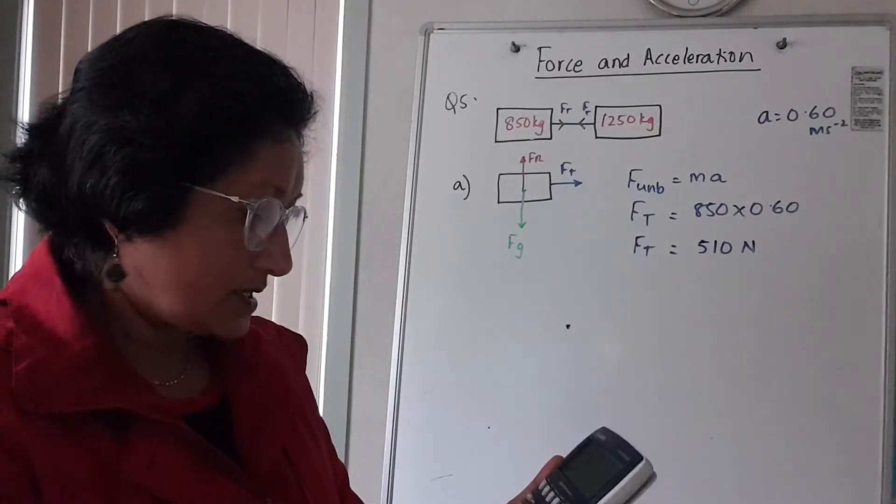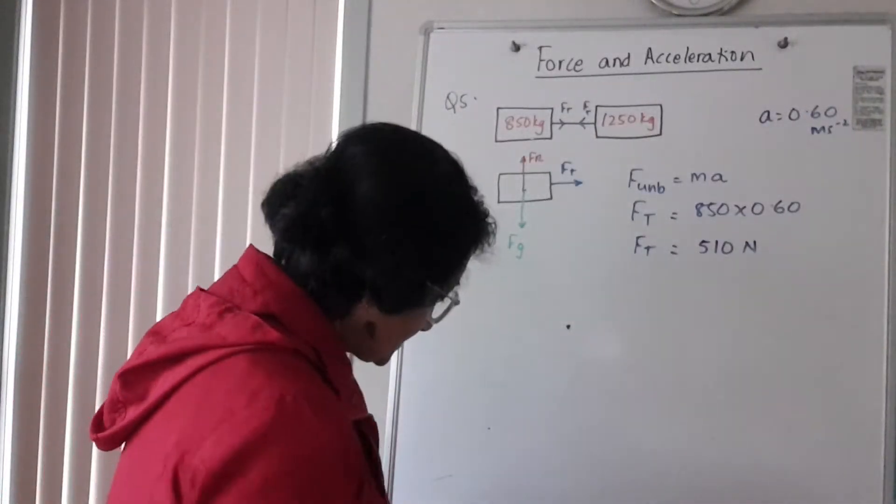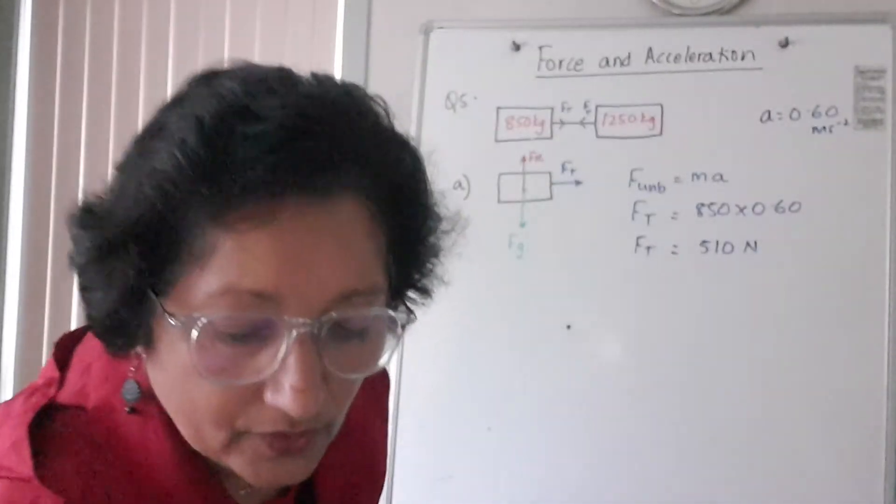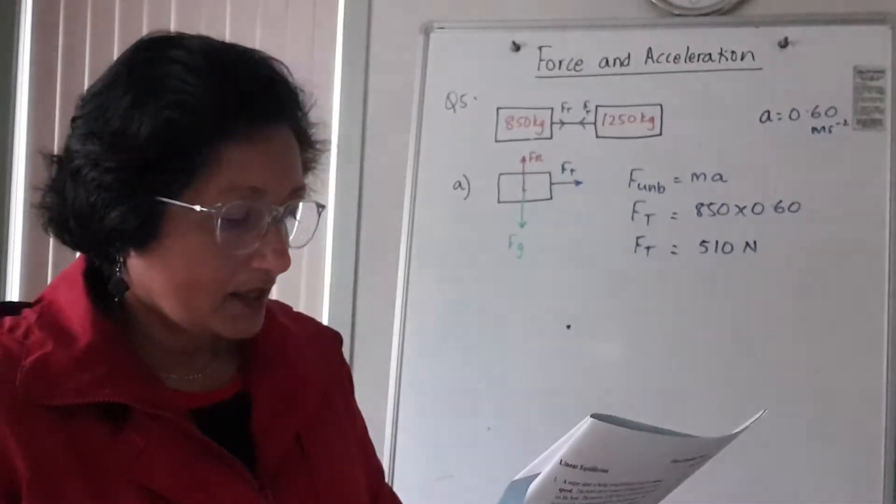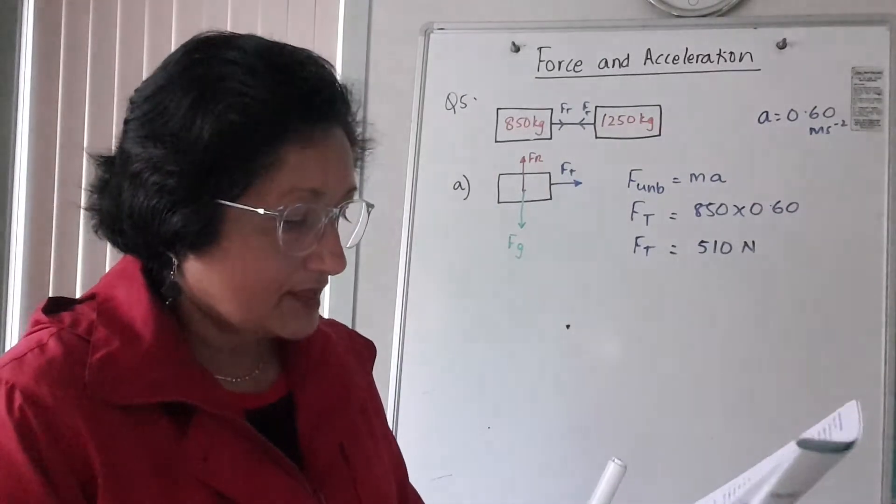So let me just check to see if I'm correct. So 850 times 0.60 is 510, so that's the answer to part A. Well, and that's the answer to B. So that's A, the diagram, that's the answer to B.